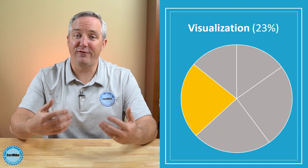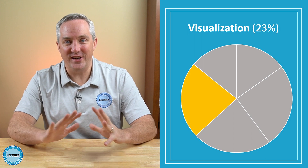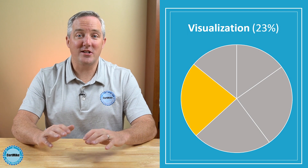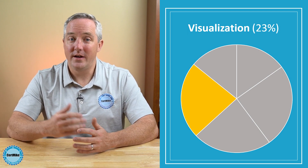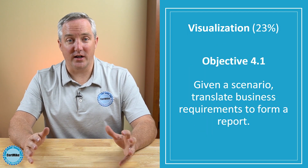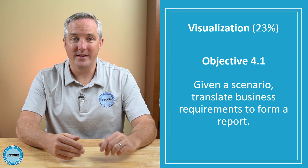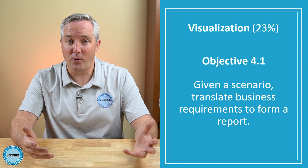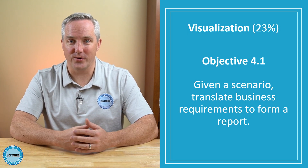Next, we move on to the fourth domain, visualization. It's often easier to tell a data story with visualizations than with words, and that's why there's an entire domain of knowledge covering this material. You'll face five objectives in this domain. The first objective asks you to translate business requirements into reports. You'll need to know how to determine the appropriate content to include in a report, and how to use filtering and views to limit the scope of the report.